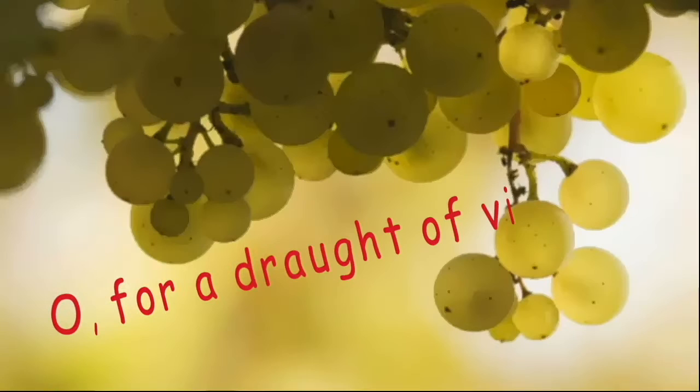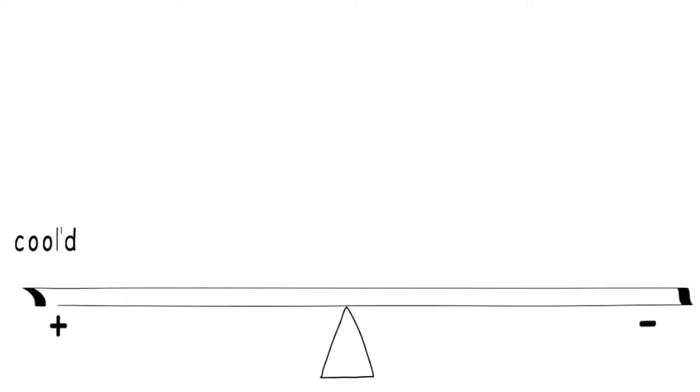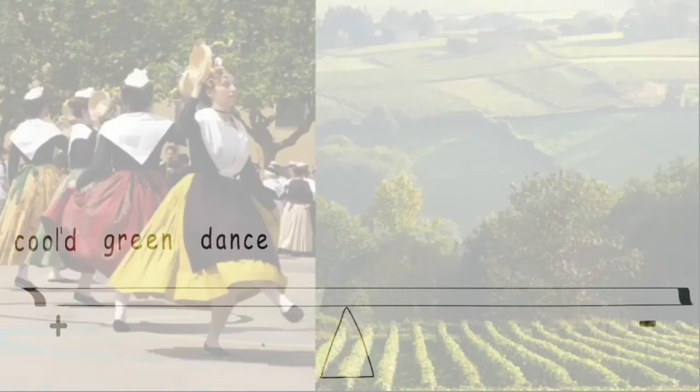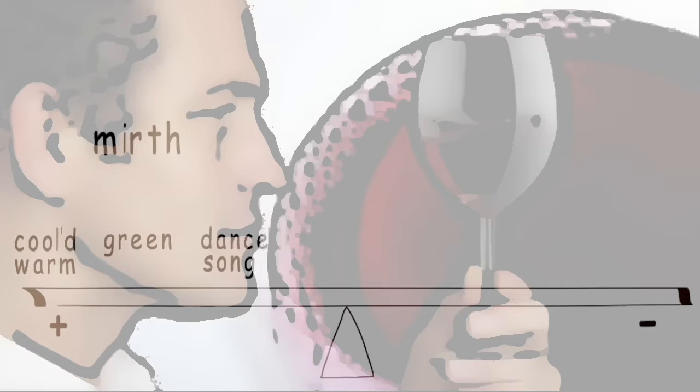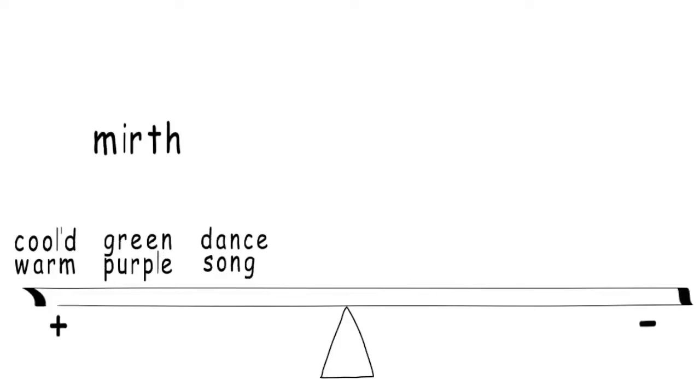Let's move on and take a look at the second and third stanzas of the poem. 'Oh, for a draught of vintage that hath been cooled a long age in the deep-delved earth, tasting of Flora and the country green, dance and Provençal song and sunburnt mirth. Oh, for a beaker full of the warm south, full of the true, the blushful Hippocrene, with beaded bubbles winking at the brim and purple-stained mouth, that I might drink and leave the world unseen, and with thee fade away into the forest dim.'